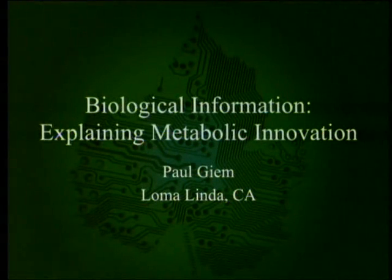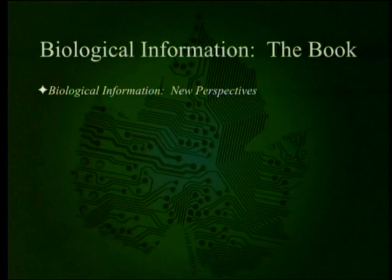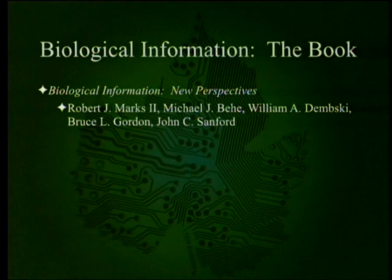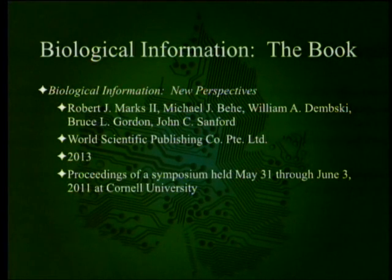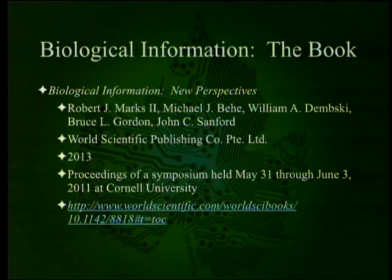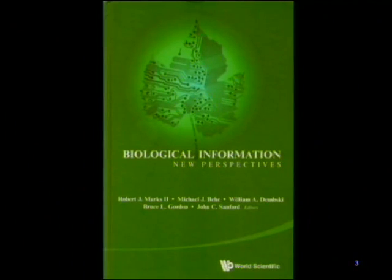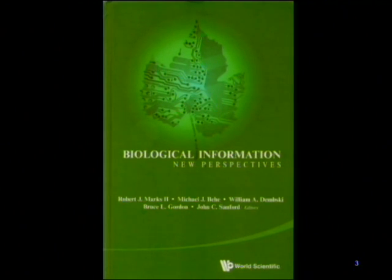We've been going through the book Biological Information: New Perspectives, edited by a number of intelligent design people and Bruce Gordon, a self-organization advocate. Published by World Scientific Publishing in 2013. It was originally supposed to be published by Springer but they backed out of the deal. It was the proceedings of a symposium held in 2011 at Cornell University. The book is available free on the internet in chapters and also in hardcover for over $100 — basically making a donation to the company, which I recommend if for no other reason than to thumb your nose at the Darwinian establishment.